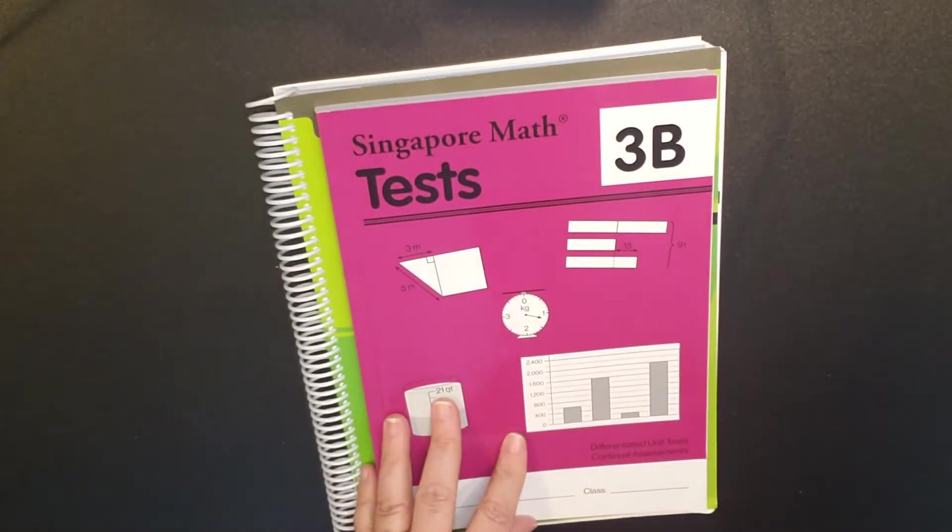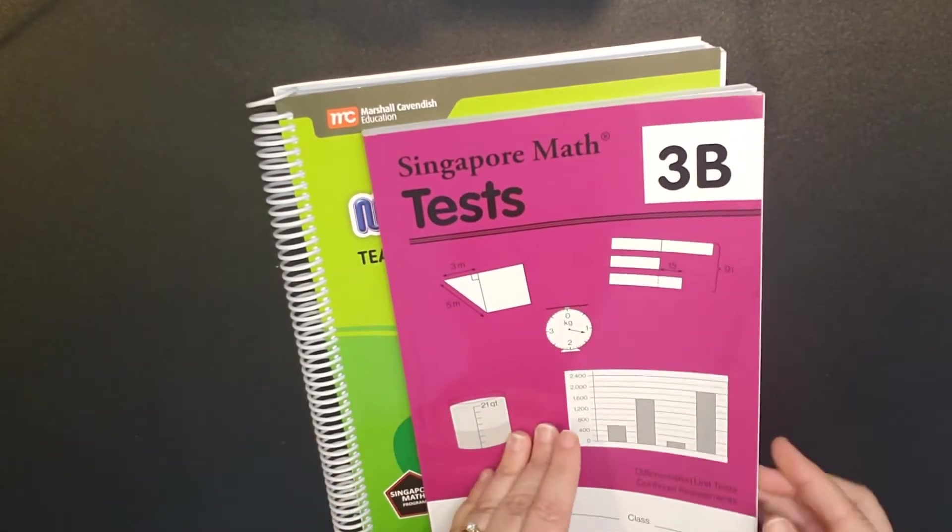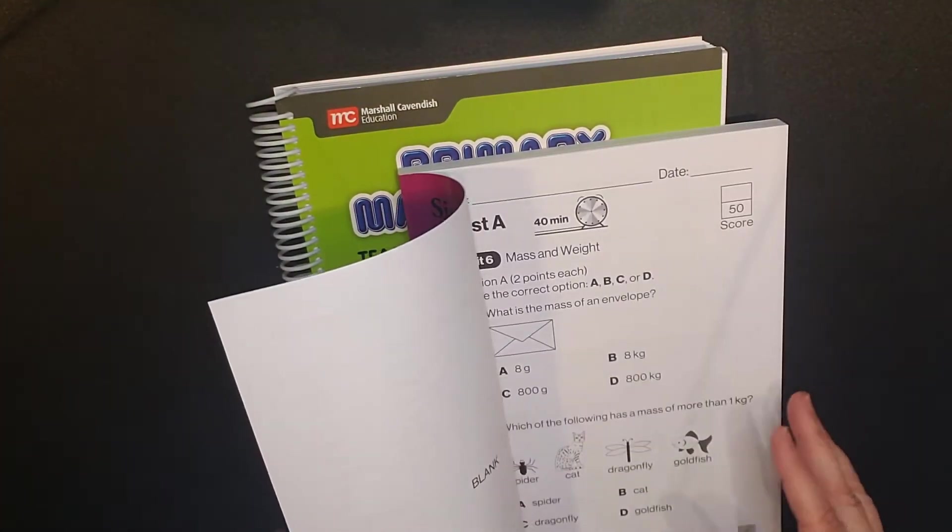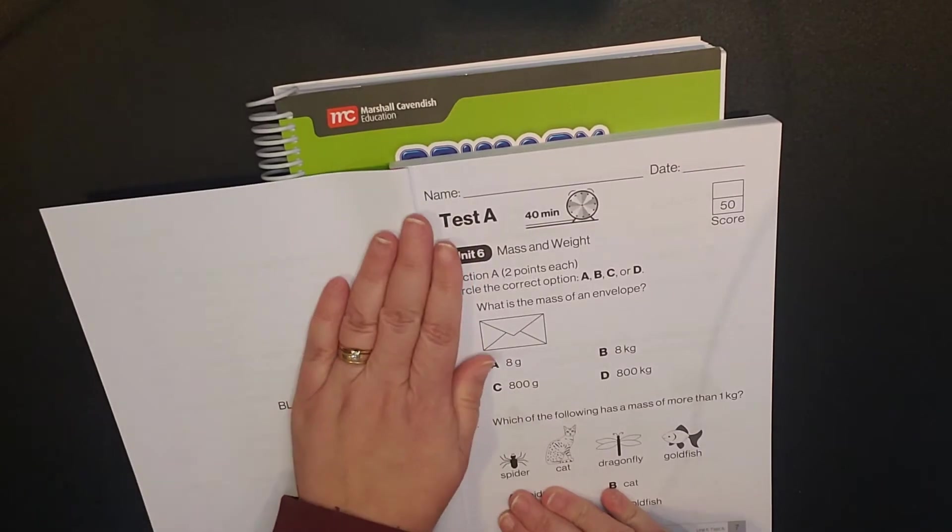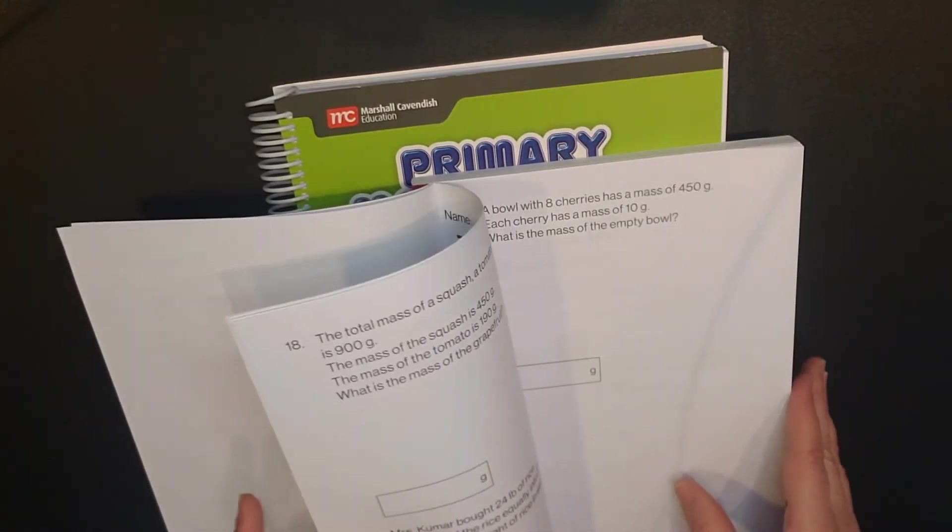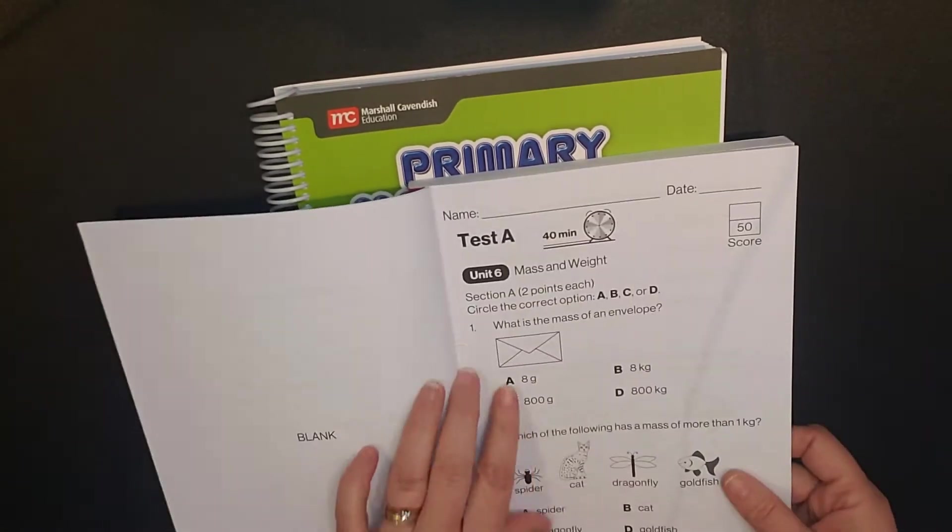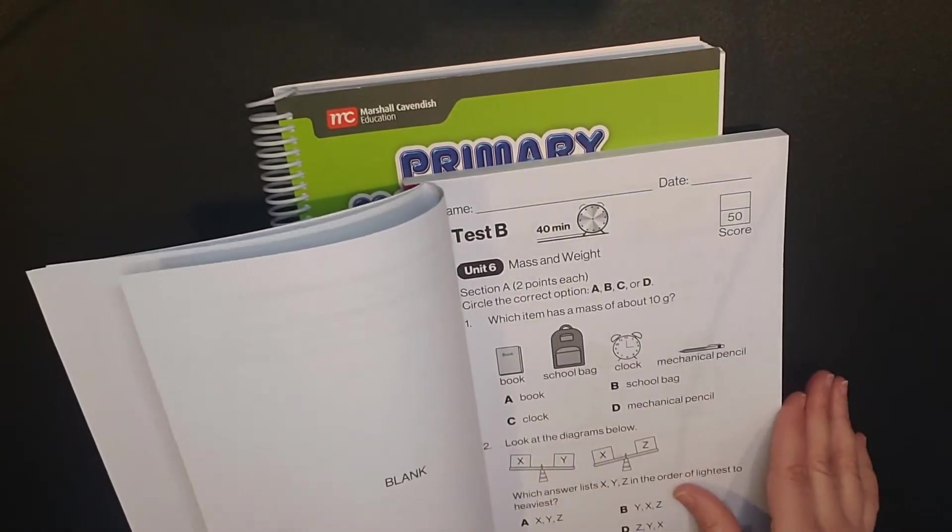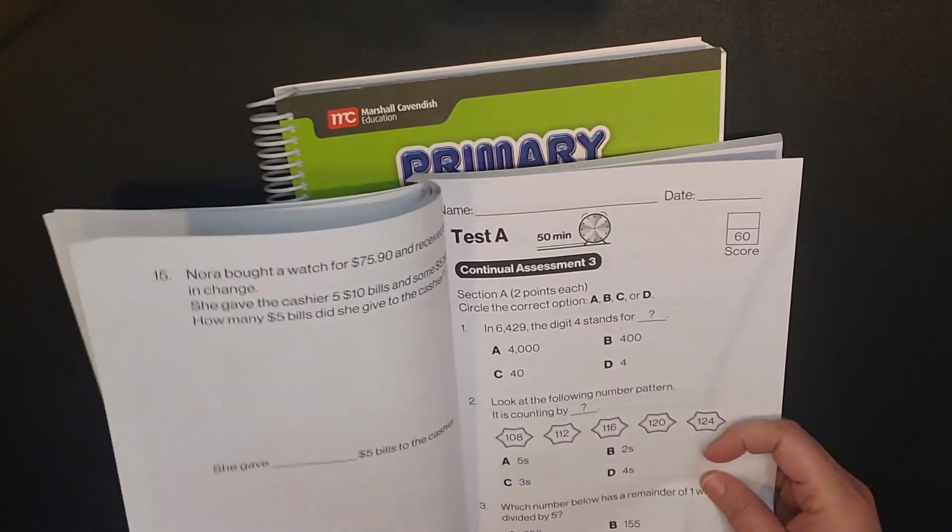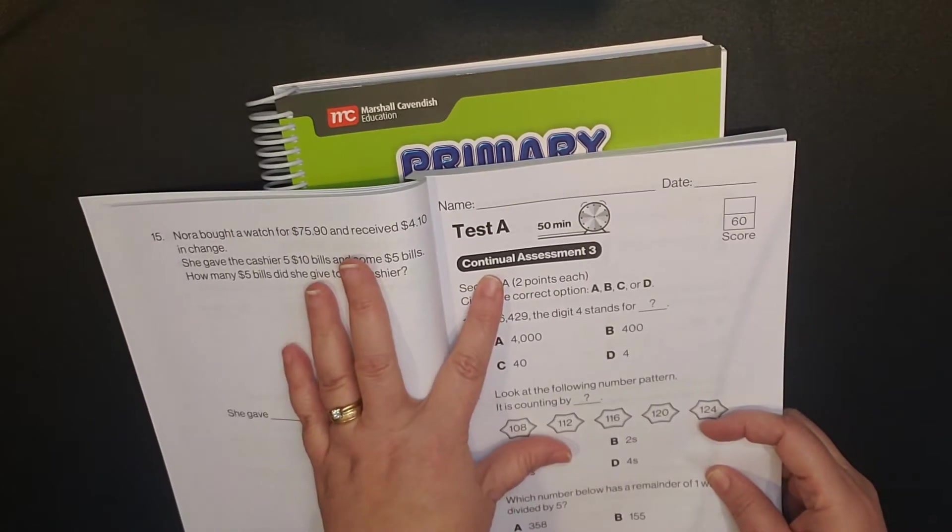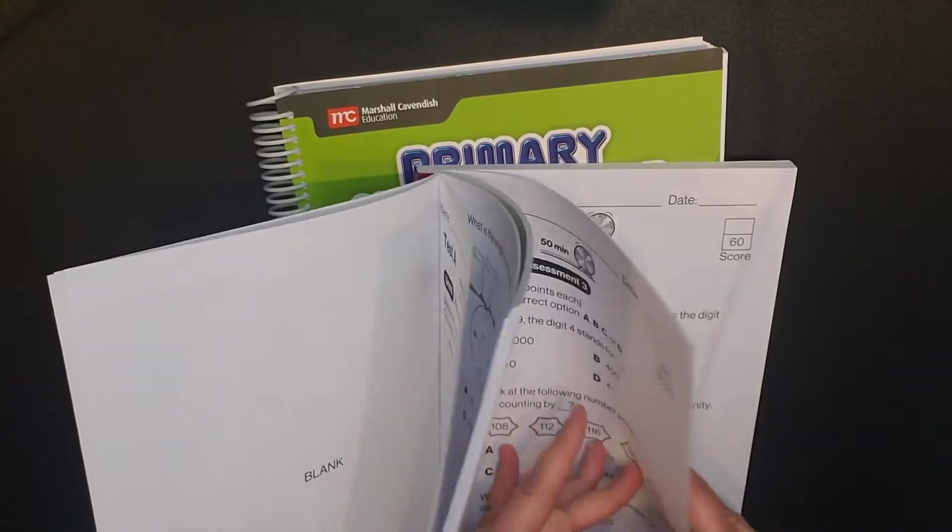Now, within the test book, a few things to note. Number one is, for each unit, there is a test A and a test B. So we're still on unit six. There's a test A and a test B. So then midway through this semester, you'll have a continual assessment.